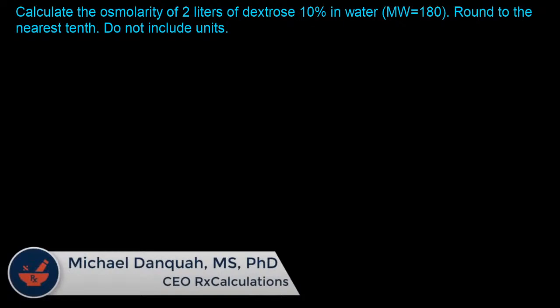The question says: calculate the osmolarity of two liters of dextrose 10% in water with molecular weight 180. Round to the nearest tenth, do not include units. The first thing we want to do is start off with the osmolarity calculation equation. The equation is: milliosmoles per liter equals the weight of substance in grams per liter divided by the molecular weight, times number of particles, times 1,000.